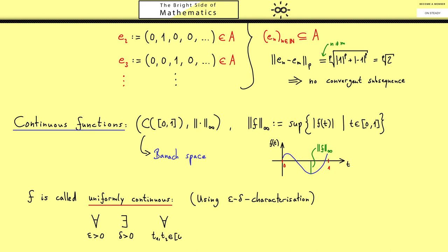Now for all epsilon greater 0 there exists a delta greater 0 such that for all t1 t2 from 0 to 1 we have the following. If the distance between t1 and t2 is less than delta then this implies that the distance between the images is less than epsilon. This is stronger than the normal continuity at each point because this delta here works for all t1 t2 at the same time. Therefore we say the continuity works uniformly.